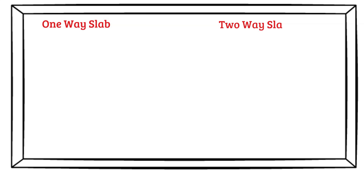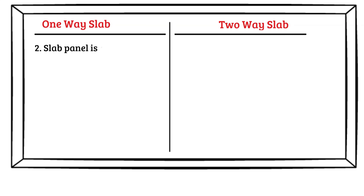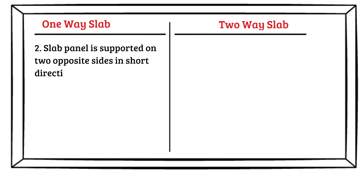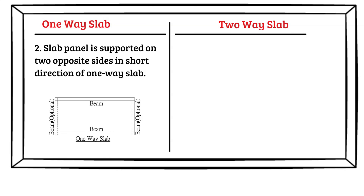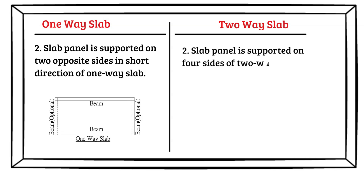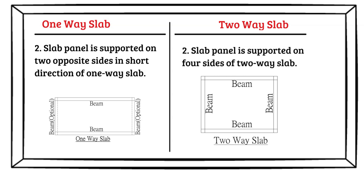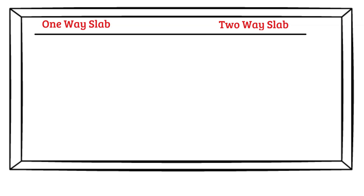Difference number two: the slab panel is supported on two opposite sides in the short direction of a one-way slab. In the figure, the one-way slab has beam support on the long sides; on the short sides, beams are optional — they may be provided if load acts on the short edges. In a two-way slab, the slab panel is supported on all four sides, as seen in the figure where beams are provided on all four sides.